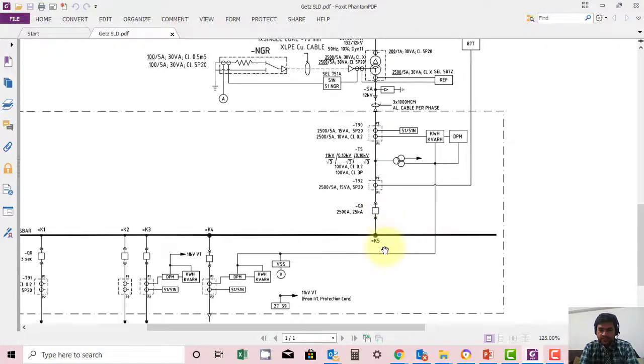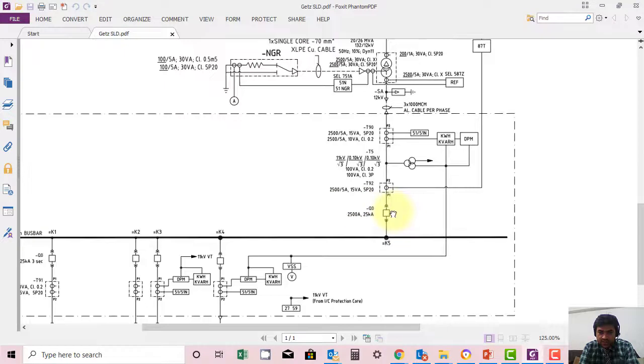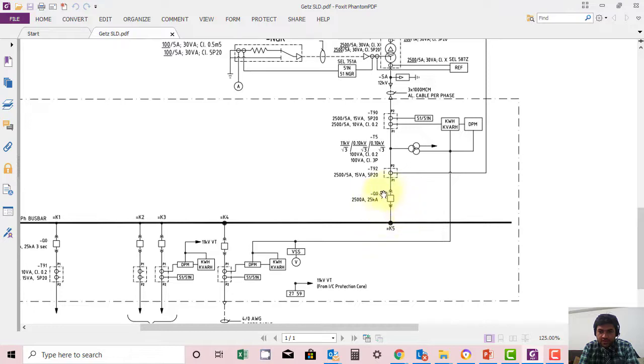Basically this is here, it's called an incoming transformer because its power is coming into the bus bar. So this switchgear is K5. This is the symbol of breaker Q-naught. These double signs are showing the isolation mechanism through racking in or racking out. This is the symbol of CT. This is another CT.